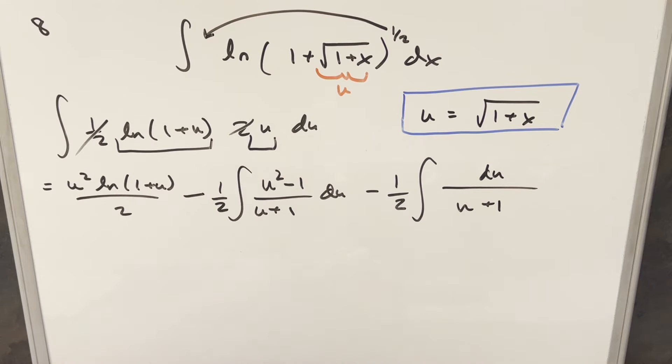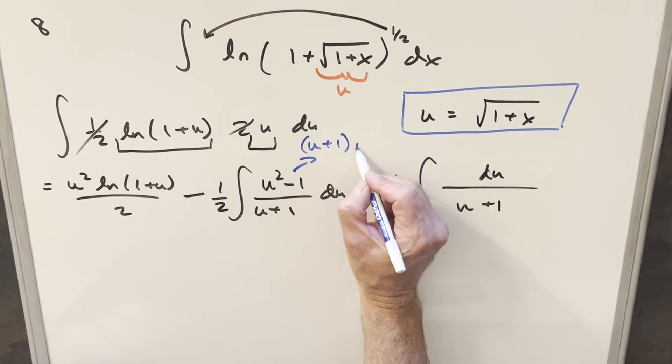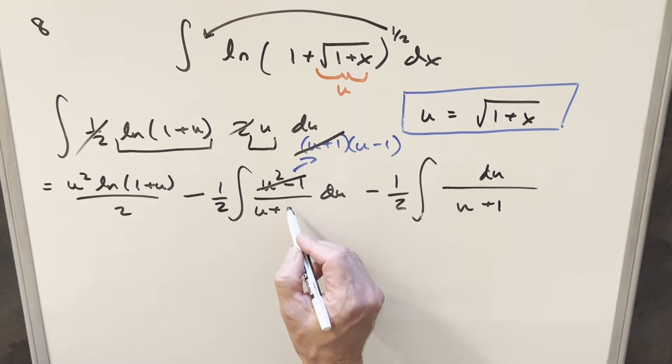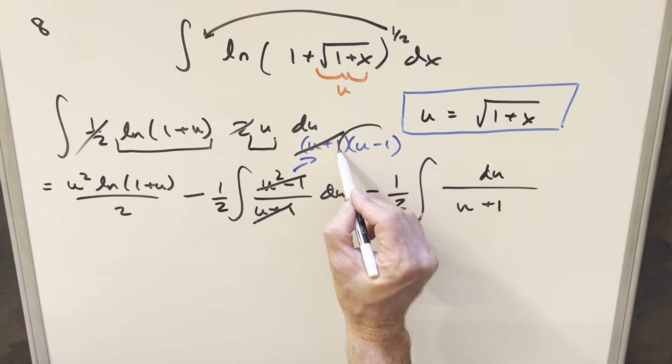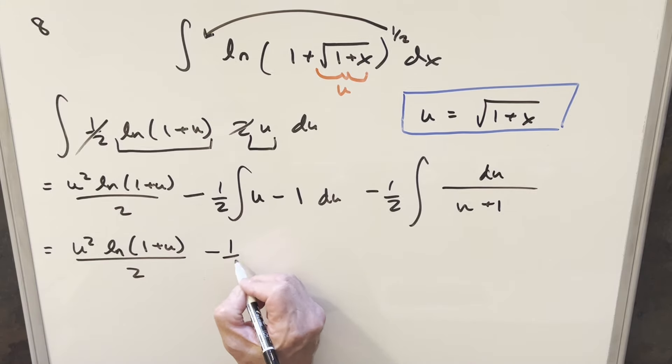This one we can factor out for u squared minus 1. What I want to do with this is we want to factor this as u plus 1 times u minus 1. And then if we do it like this, then what's going to happen, u plus 1 is going to cancel with u plus 1, and then we're just integrating u minus 1. But now with what we have here, all the integrals are going to be easy, so let's see what we have first.